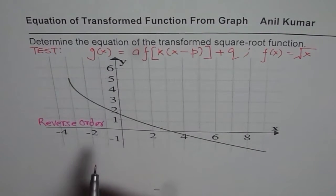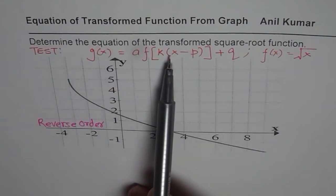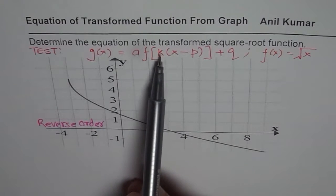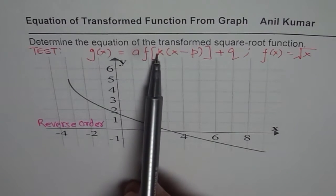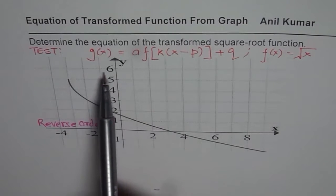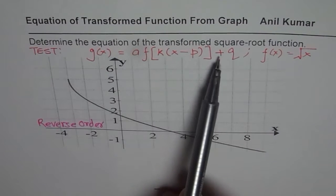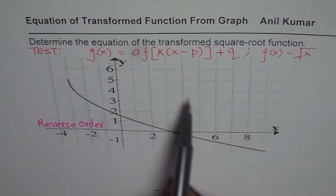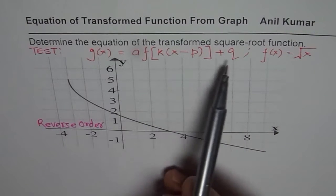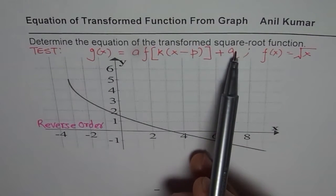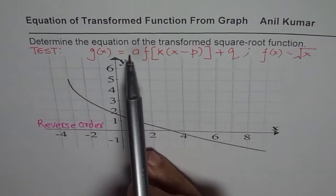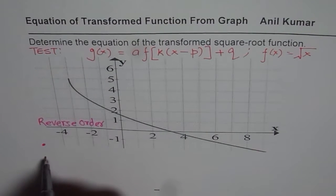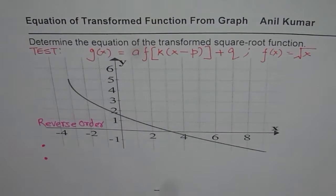Reverse order here really means that if you have the equation you would sketch it by taking care of stretches, compressions, and reflections first — that is, multiplication — and then translations. Working in reverse means that since we have the graph and are trying to find the equation, we start from the other side: first do the translations, then look for compressions and stretches.